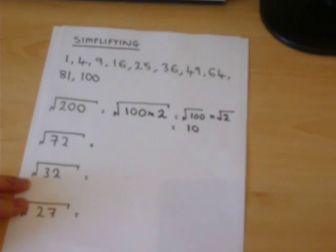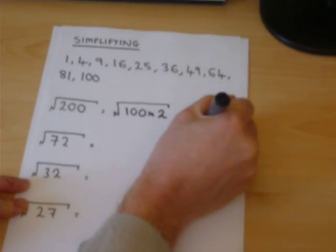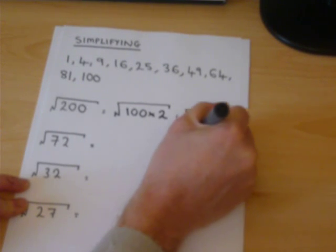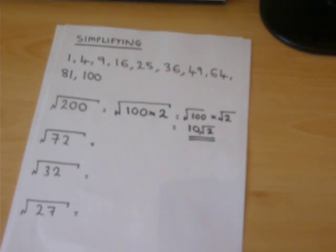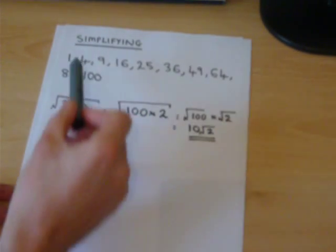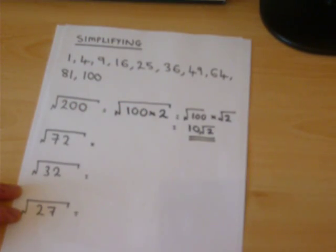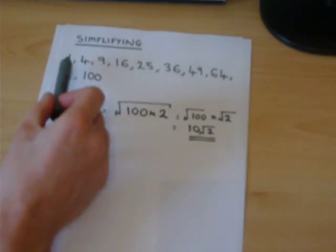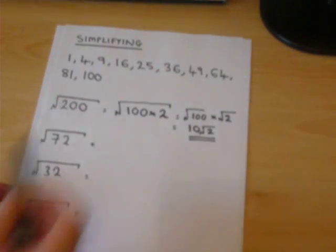We can work out that part, so we leave it as root 2. In the second example, not as obvious, but we look and think, is four a factor? Yes. If we keep on going, we find the largest factor of 72 from the square numbers we've got so far is 36.